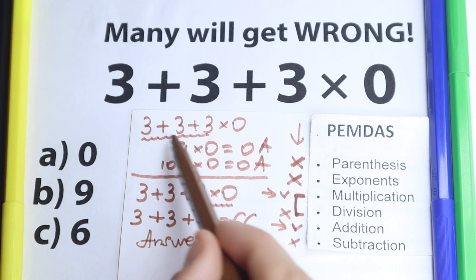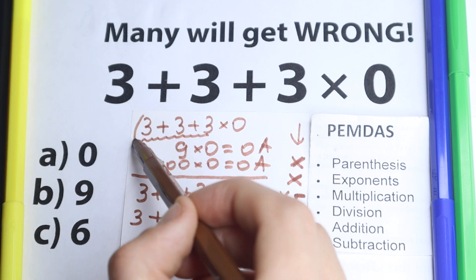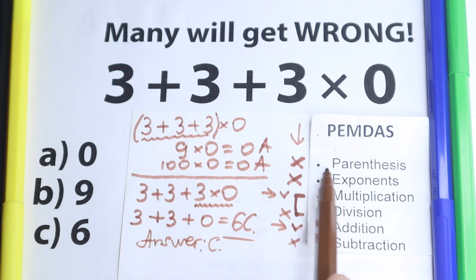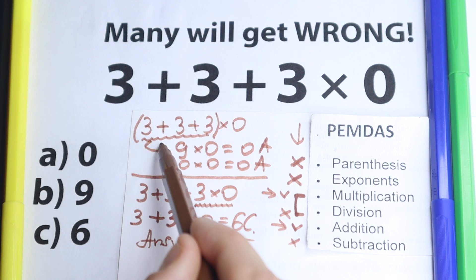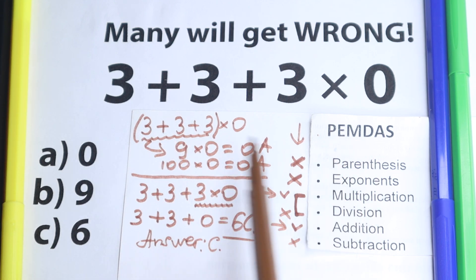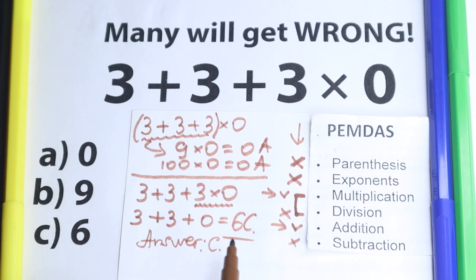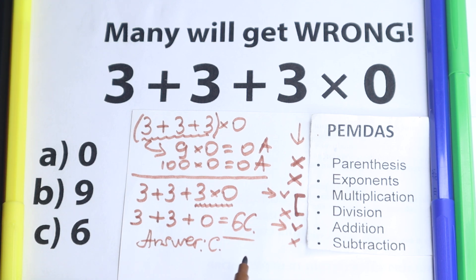I want to go back to the beginning — the answer of 0 is absolutely wrong without parentheses. But if we put parentheses around 3 plus 3 plus 3, then you start from the parentheses first, and the correct answer would be 0. This is a trick: if you have parentheses, you start there and get 0. But in our case we don't have any parentheses, so we multiply only 3 times 0, and multiplication comes before addition — that is the key moment.